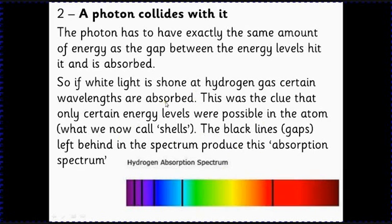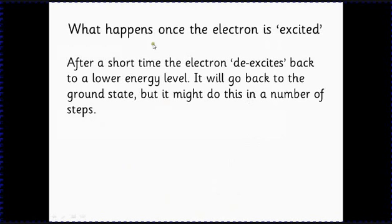So the next question is, what happens once the electron is excited? Well, after a short time it will de-excite back to the lower energy level, and it might go all the way back to the ground state in one go, or it might do a number of steps. And what you need to be able to do is to calculate the wavelengths of the photons that will be produced in that process.